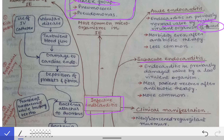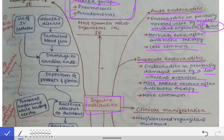In acute endocarditis, morbidity even after antibiotic therapy is high, but the plus point is that acute endocarditis is less common. Subacute endocarditis occurs in a previously damaged valve caused by a low virulent organism. Most patients recover after antibiotic therapy, but the downside is it is more common. The difference between acute and subacute endocarditis may be asked in viva examinations.